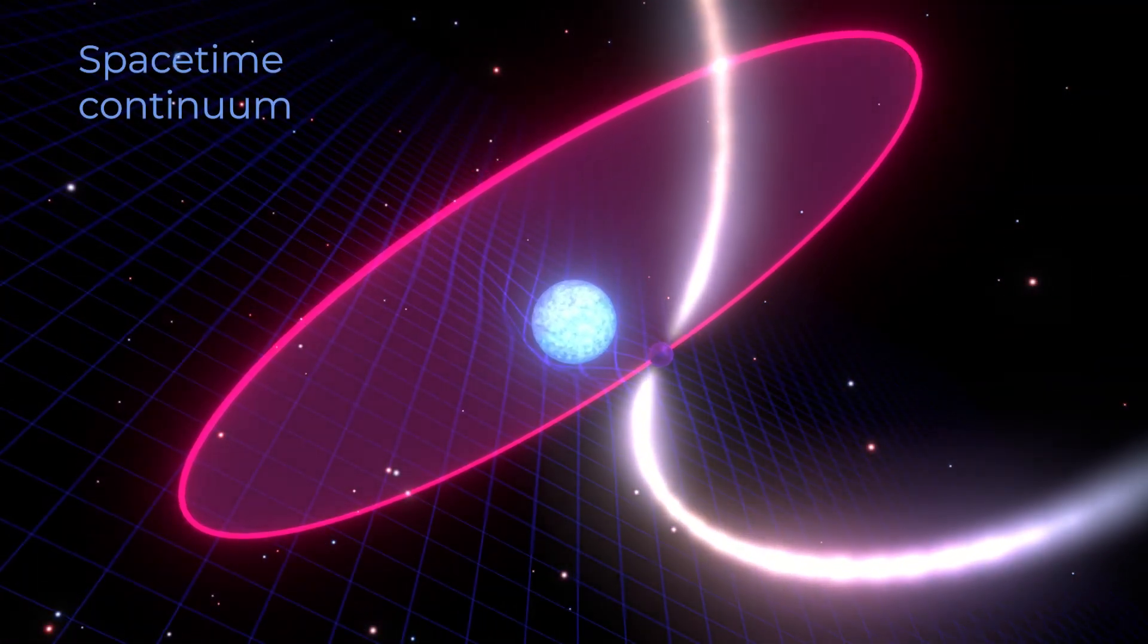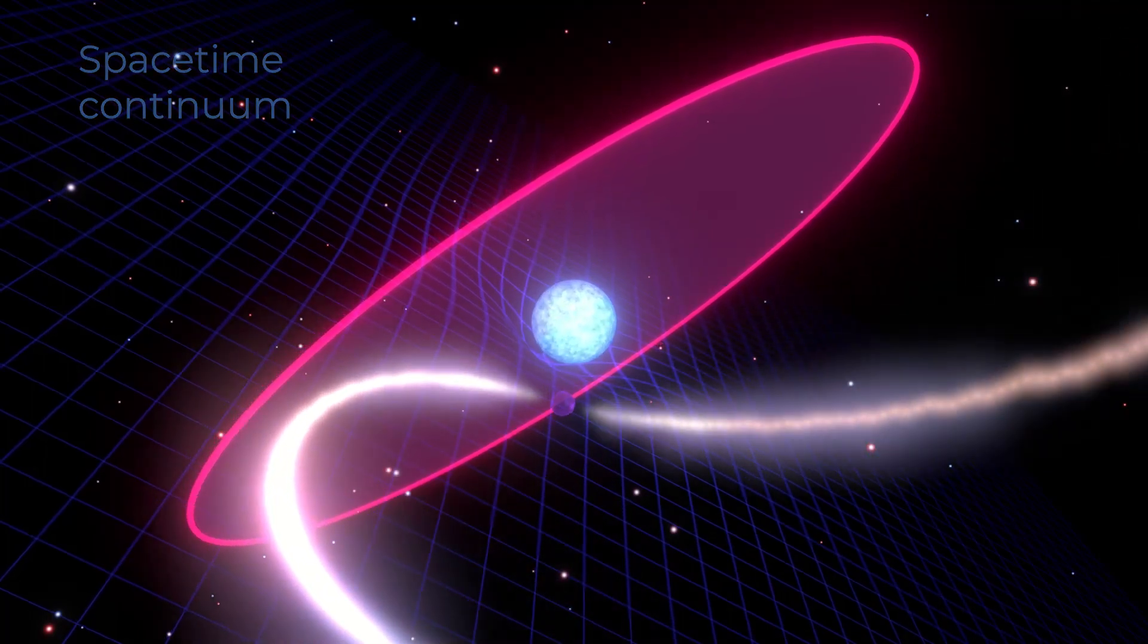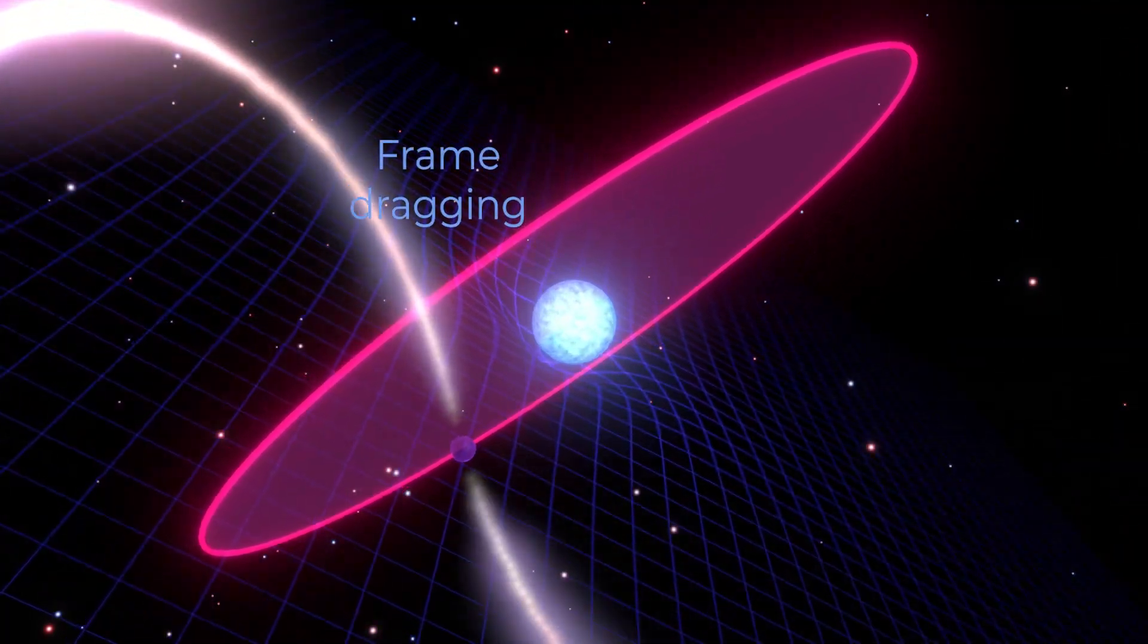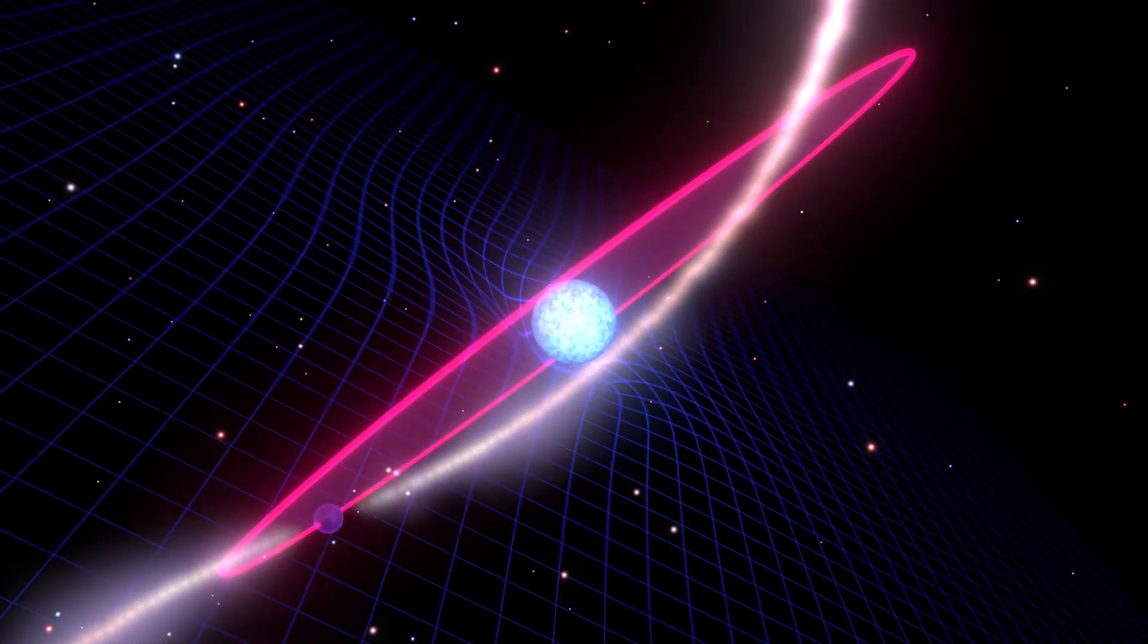In our system, the rapidly spinning white dwarf drags space-time a hundred million times faster than the Earth would, causing the entire orbit to tumble.